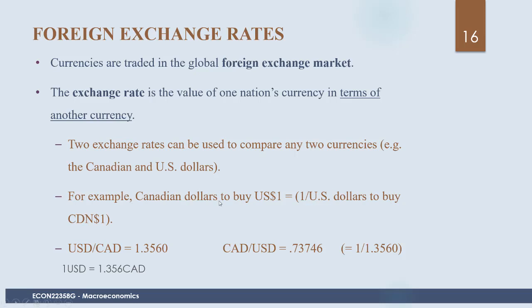We can also express this same relationship the other way: one Canadian dollar equals 0.7346 US dollars. We get this by dividing both sides by 1.356, so one Canadian dollar equals 1 ÷ 1.356 = 0.7374. When the exchange rate is expressed this way, we are asking how much foreign currency is needed to buy one Canadian dollar. The exchange rate can be expressed in terms of either the domestic or foreign currency.